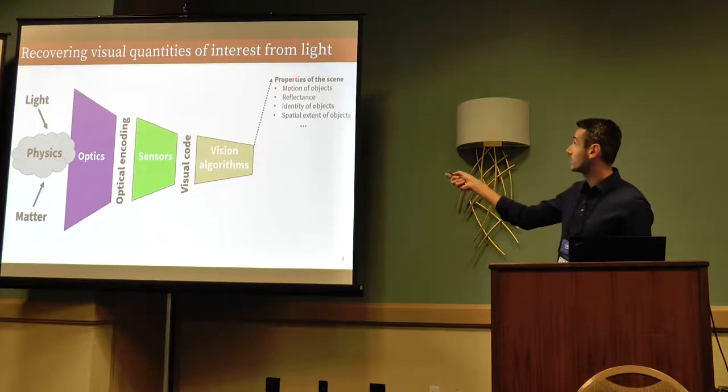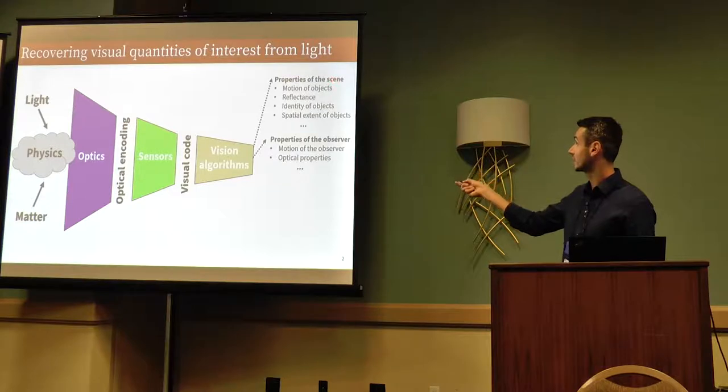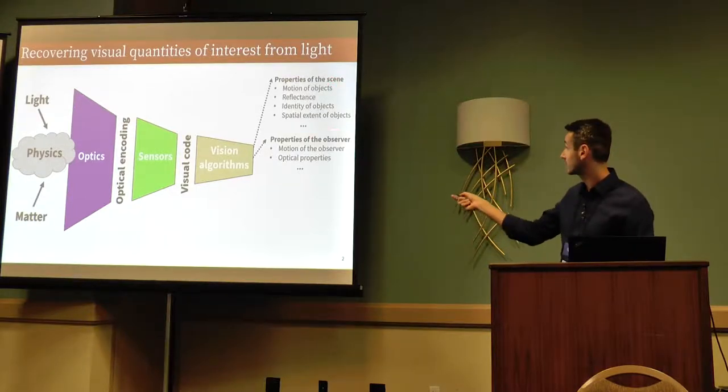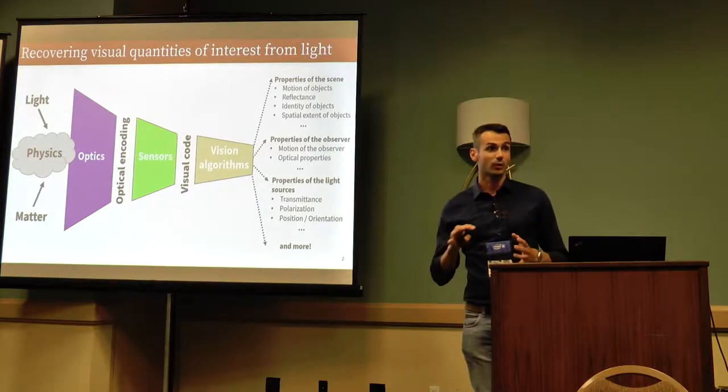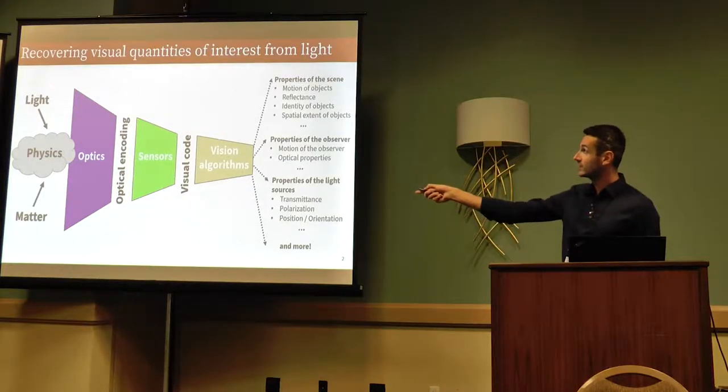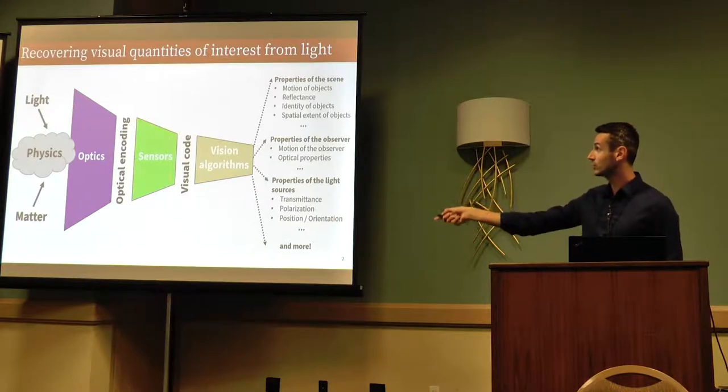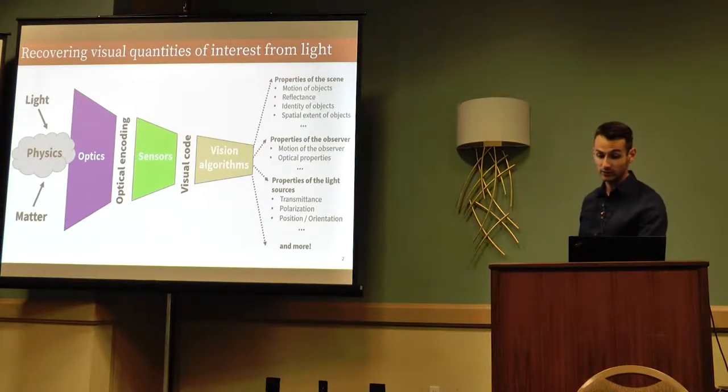From a high-level perspective, we're interested in quantities such as properties of the scene, like motion of objects, the spatial extent, or properties of the observer, properties of light sources, and many others. I like to think of this whole vision chain as some encoding of light-matter interaction into some visual code, and then we have these vision algorithms that actually act as a decoder.